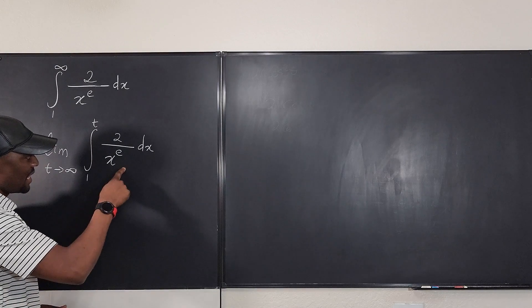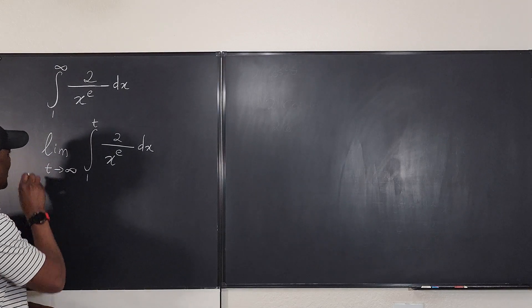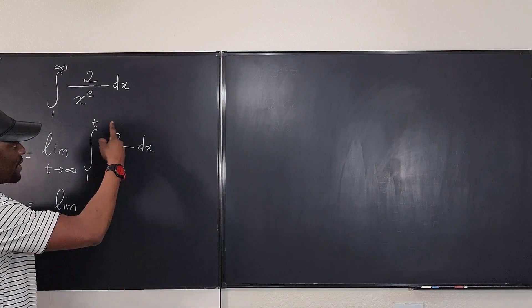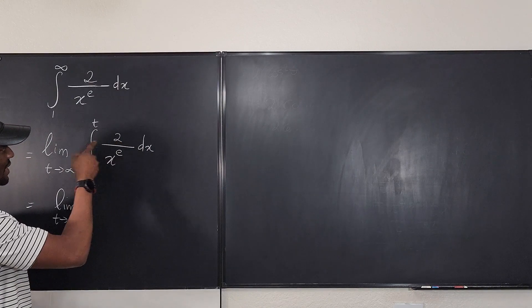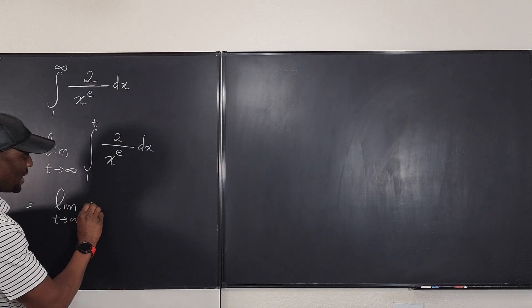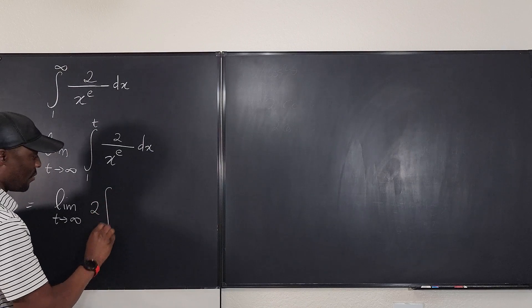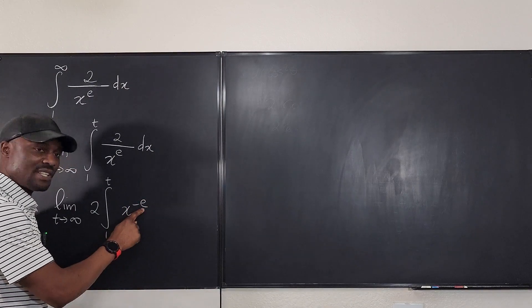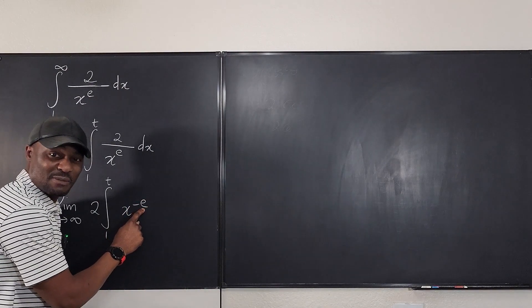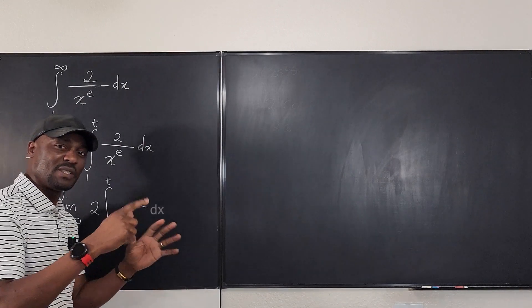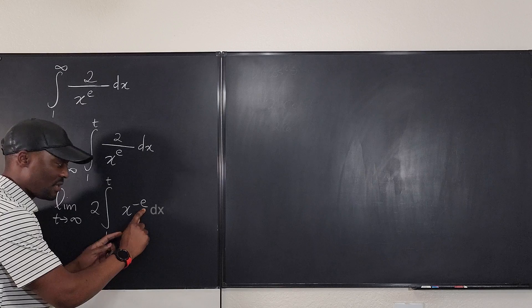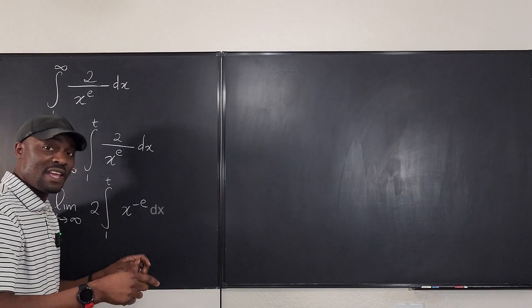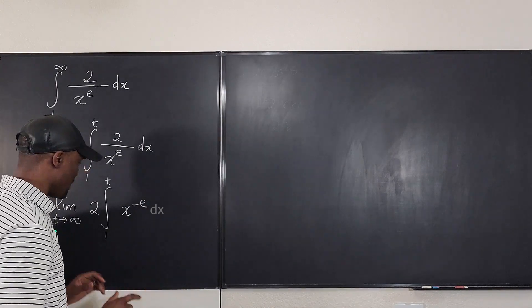What we do now is take this integral. We'll still say that this is equal to the limit as t goes to infinity. We can take the 2 out and write it as 2 times the integral from 1 to t of x to the negative e. By the way, e is still a number — it's an exponent just like 2, 3, or 4, but this one is 2.718. There's no special integration technique; you apply the reverse power rule.